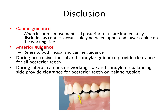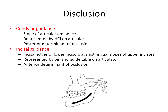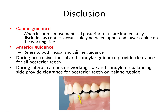Anterior guidance is sometimes used synonymously with canine guidance, but there's an important distinction. Anterior guidance refers to both incisal guidance — lower incisors gliding against the lingual surfaces of upper incisors in protrusive movement — and canine guidance — lateral disclusion where canines disclude the posterior teeth. Because canines and incisors together make up the anterior teeth, anterior guidance covers all guidance occurring between those two units.